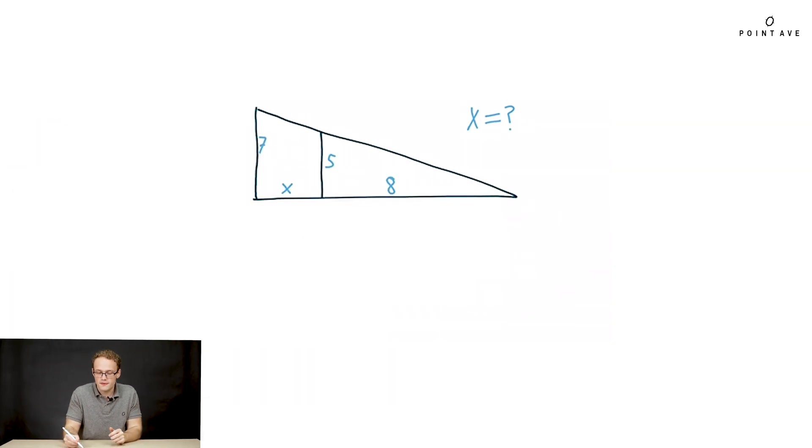So let's find a proportion by first finding each of our ratios. Again we want to think like over like. So we're going to make one proportion the heights and one proportion the bases. So first our heights are 7 and 5 so that gives us our ratio 7 over 5 by putting the larger triangle over the smaller triangle.